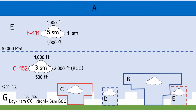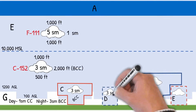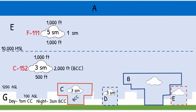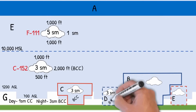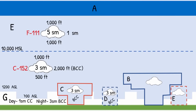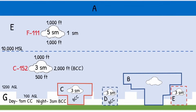What do you think the visibility and cloud clearance requirement is in Class C airspace? That's right — Cessna 152. What do you think the visibility and cloud clearance requirement is in Class D airspace? Cessna 152. What do you think the visibility and cloud clearance requirement is in Surface E airspace when it's active? That's right — Cessna 152.